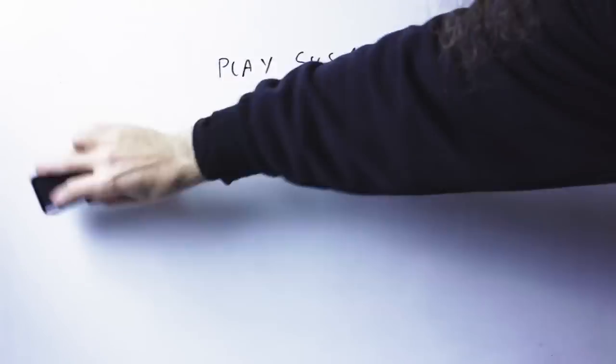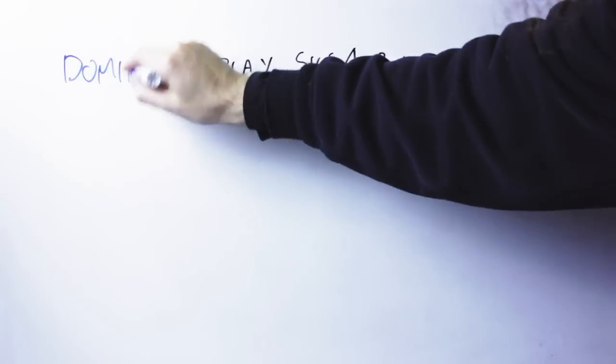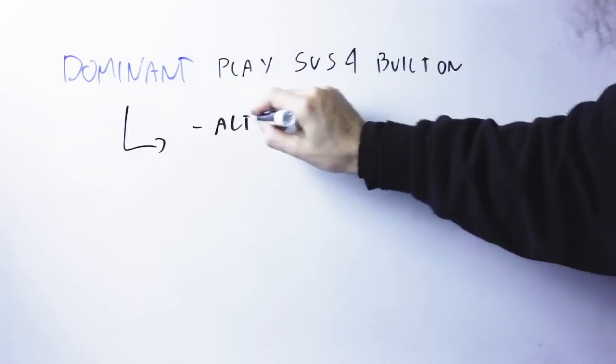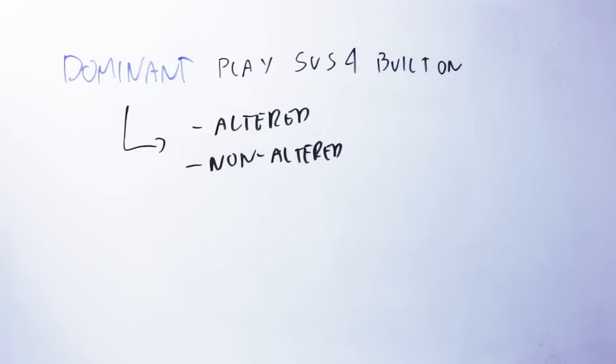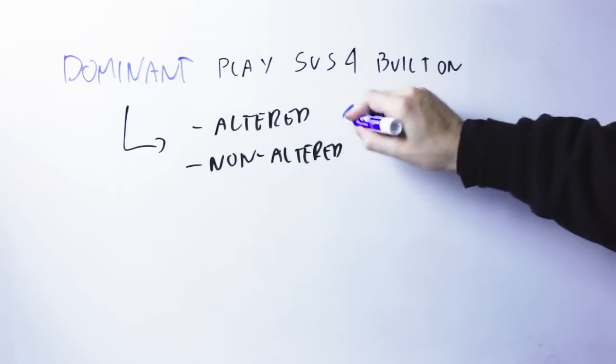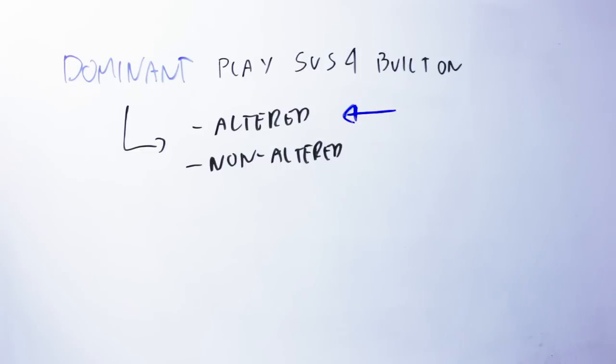What to do with dominant chords? We need to distinguish at this point between two subclasses of dominant chords, the altered dominant chords and the non-altered dominant chord. Now, if you want the jazzy sound, super atmospheric, always assume that the dominant is altered.